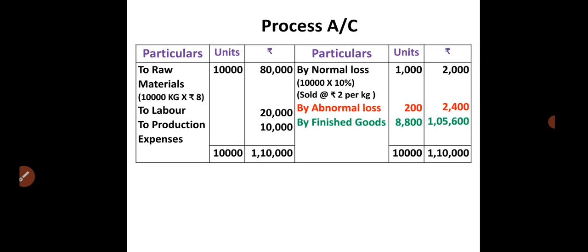In a process account, there are 3 columns on each side — both debit and credit sides. The columns are: Particulars, Units, and Rs. This applies to both the debit side and the credit side.